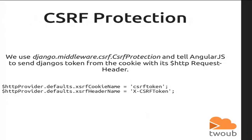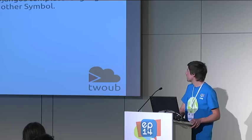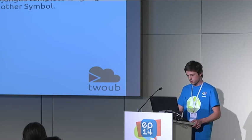First of all, Django uses CSRF protection if you activate the middleware, so we have to tell AngularJS to take the token from the cookie and send it with every asynchronous request. The next problem: AngularJS templates collide with Django template language because they both use double curly braces, so we have to tell Angular to use, for example, a curly brace and a dollar sign instead.